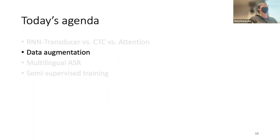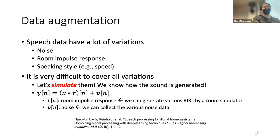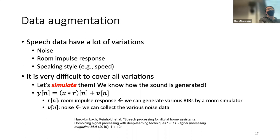The first advanced topic is data augmentation, which is widely used in speech processing even before deep neural networks because speech has a lot of variations — noise, room impulse response, speaking style, speaker, emotion, longer context, and more.